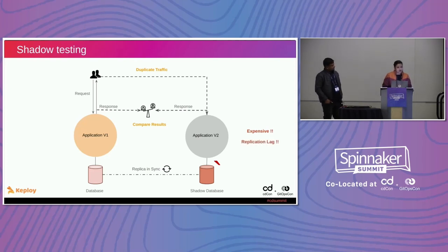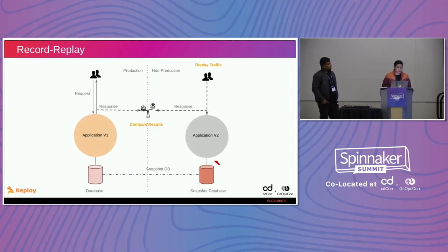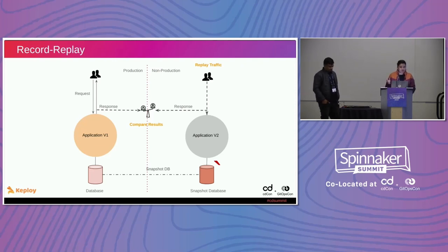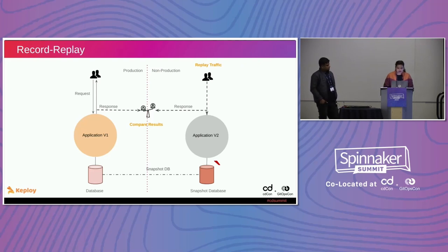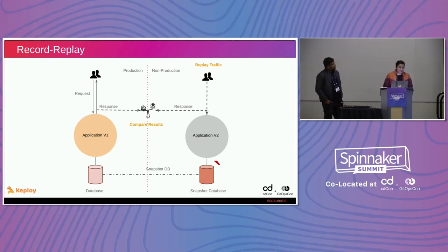We moved this setup to a non-production environment: we created a snapshot database in a non-prod environment and connected the new version of the application to that. When you replay traffic, the state of the database is the same initially, so tests pass. But after that, your tests start breaking and there is a lot of flakiness — the pipeline becomes brittle.